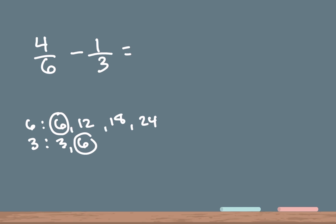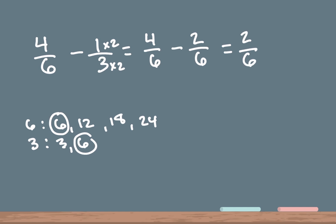We're gonna rewrite our problem, which is 4 over 6 minus — we're gonna take 3 times 2. Whatever we do to the bottom number we have to do to the top number, so 1 times 2 equals 2 over 3 times 2 which is 6. Now we have a common denominator of 6, so we can subtract the top numbers: 4 minus 2 is 2, and the bottom number stays the same — 6.